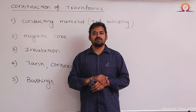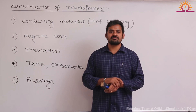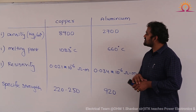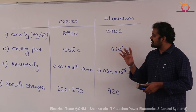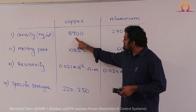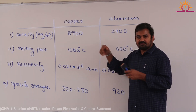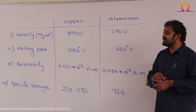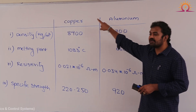Let us find out some differences between copper material and aluminum material so that we can decide which material is used for a transformer. There are so many differences, but these are the two major differences. Coming to the density point of view — that means the weight of the material — for a given volume, copper weight is 8900, aluminum weight is just 2700. For a given volume, copper winding weight will be almost three times more than aluminum weight. Also, aluminum is abundantly available on the earth's surface, and therefore the cost of aluminum is always less compared to copper material.